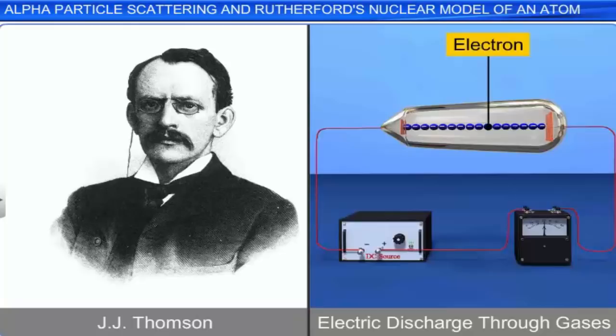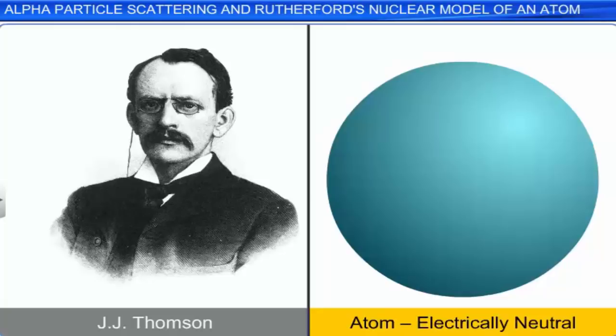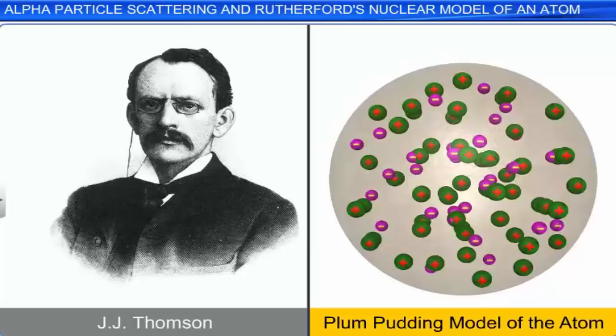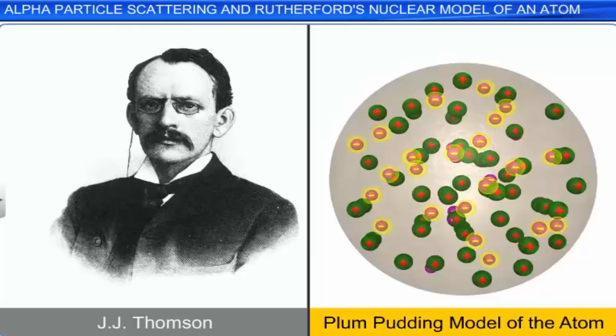Since the atom is electrically neutral, it was proposed that the atom must also contain positively charged particles, such that the total negative charge in the atom is equal to the positive charge in it. Based on these assumptions, J.J. Thomson proposed the plum pudding model of the atom. He proposed that the total positive charge is spread throughout its volume, and the negatively charged electrons are distributed in this volume like seeds in a watermelon.